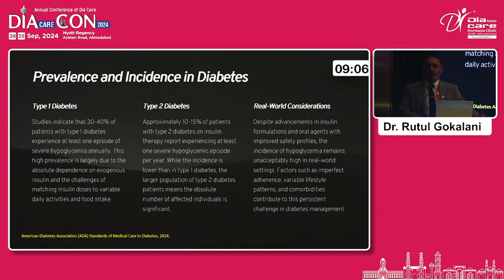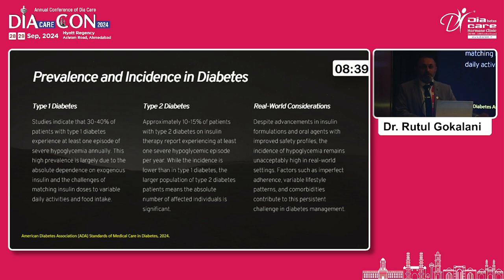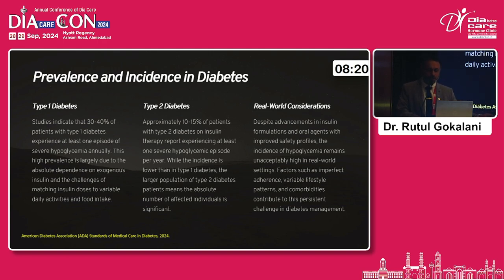In type 2 diabetes, we now have molecules that apparently do not cause hypoglycemia — like DPP-4 inhibitors, SGLT-2 inhibitors, metformin, and even GLP-1 receptor agonists along with pioglitazone. Most molecules do not cause hypoglycemia except sulfonylurea and insulin. But in our practice, around 40–50 percent of patients are on sulfonylurea, and I would say around 25 percent of patients at least have hypoglycemia once a year. Despite advancements in insulin and newer co-formulations, the incidence of hypoglycemia remains unacceptably high in real-world settings.